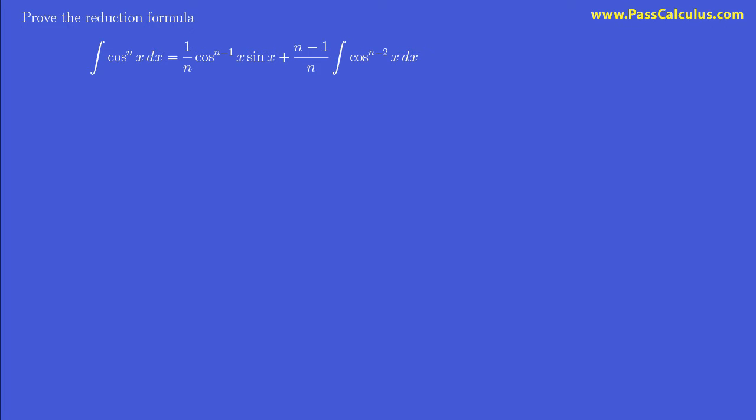Let's prove this reduction formula for the powers of cosine. The way I would like to start this is just to get an abbreviation for what cos to the power of n is. So why don't we just let i_n, i sub n, be the integral of cosine to the power of n. So this is for any n greater than or equal to zero.